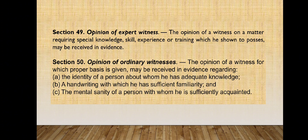When the opinion of a witness is admissible: first, on a matter requiring special knowledge, skill, experience, or training which he is shown to possess — that is, when he is an expert — regarding the identity of a person about whom he has adequate knowledge, regarding the handwriting of a person with which he has sufficient familiarity, or when he is an expert witness. The law allows that an ordinary witness identify the signature of somebody; one does not have to be an expert, but he has to establish familiarity with the signature. On the mental sanity of a person with whom he is sufficiently acquainted, or if the latter is an expert witness.